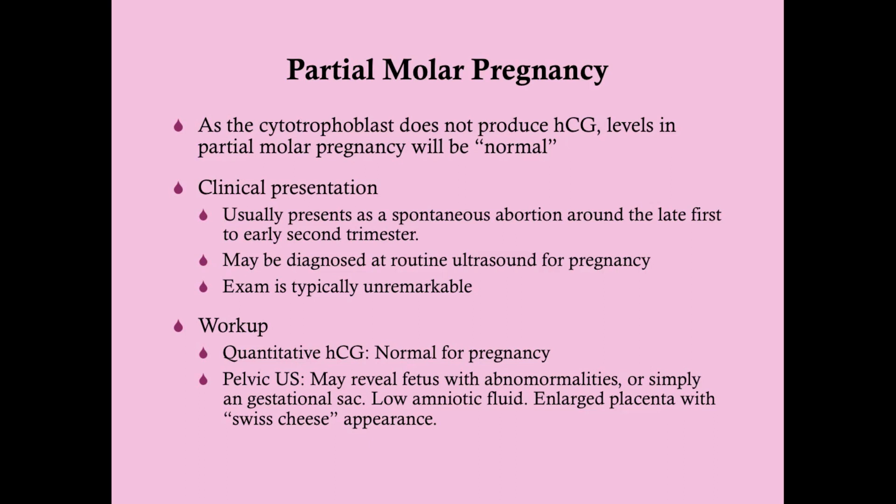The clinical presentation of partial molar pregnancy is a little difficult. Because there is no passage of cherry-like masses and no excess vomiting or hyperthyroidism, partial molar pregnancy typically presents as a spontaneous abortion. It usually will not abort until late first or early second trimester. These women will typically think they're pregnant, then have demise and miscarriage. It is typically not diagnosed until ultrasound is done or the expelled material undergoes genetic analysis and is found to be triploid.